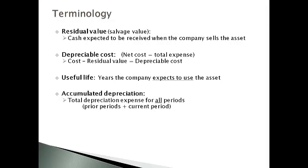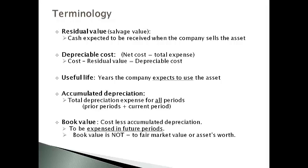Accumulated depreciation is the total depreciation expense for all periods the asset has been used — the total for all prior periods plus the current period. Book value is the cost of the asset less accumulated depreciation or amortization. Book value represents the amount that will be expensed in future periods; book value does not represent fair market value.